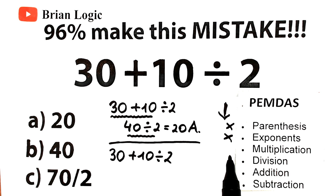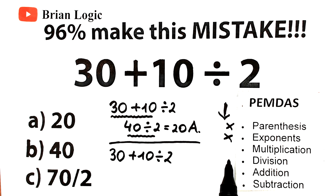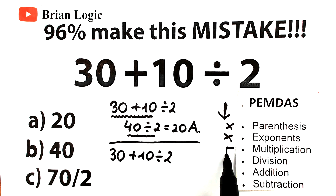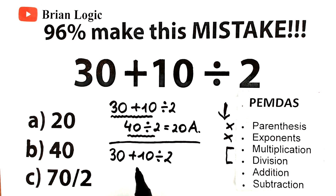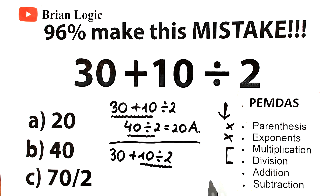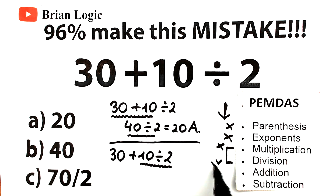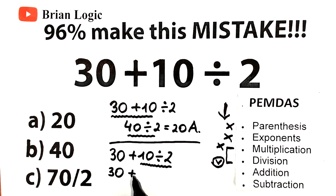Third, multiplication and division: after handling parentheses and exponents, perform multiplication or division from left to right. Let's scan where we have a multiplication or division sign. We have addition here — we're not interested in that. We have division here — we are interested in that division. So we handle this division step: 10 divided by 2 equals 5. So we now have 30 plus 5.